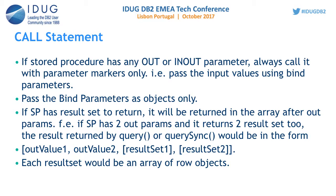You can get all results at once using the query API. The multiple result sets will be within the array. If a result set returns two rows, those two rows will be two objects within that result set. If another result set also returns two rows, those two objects will be within their respective result set.